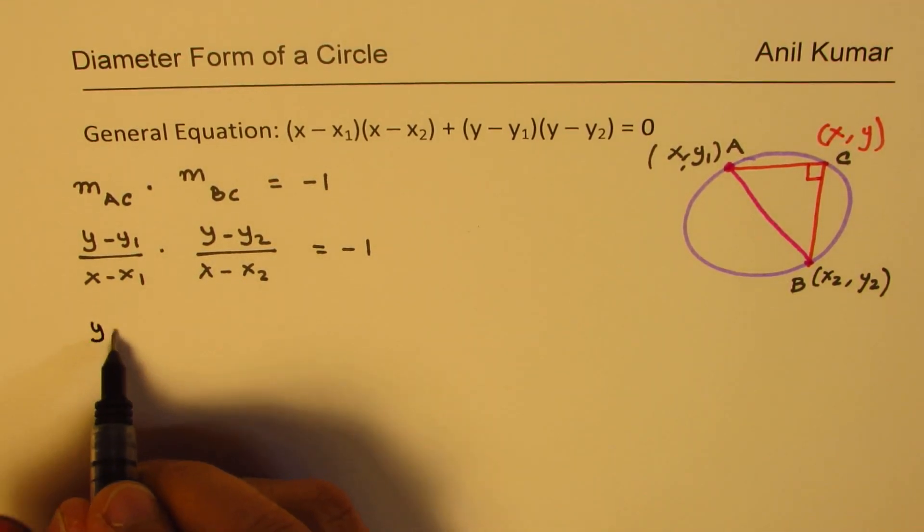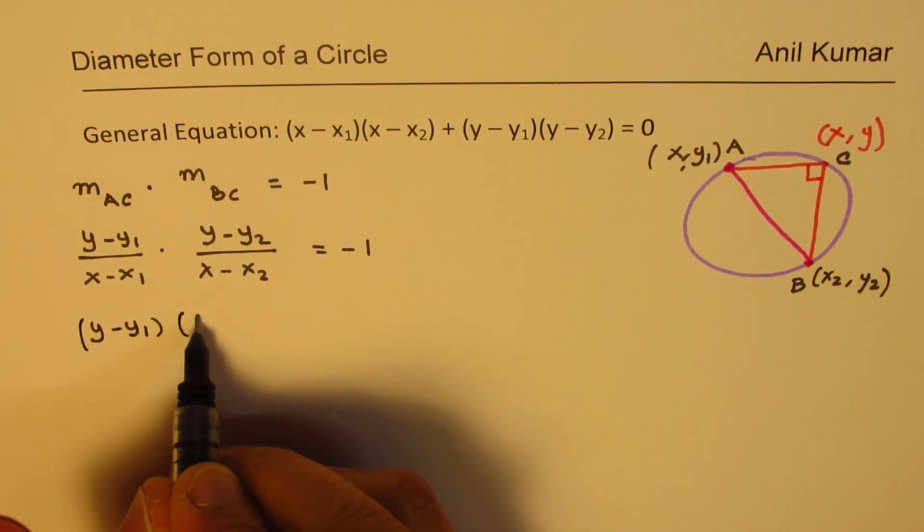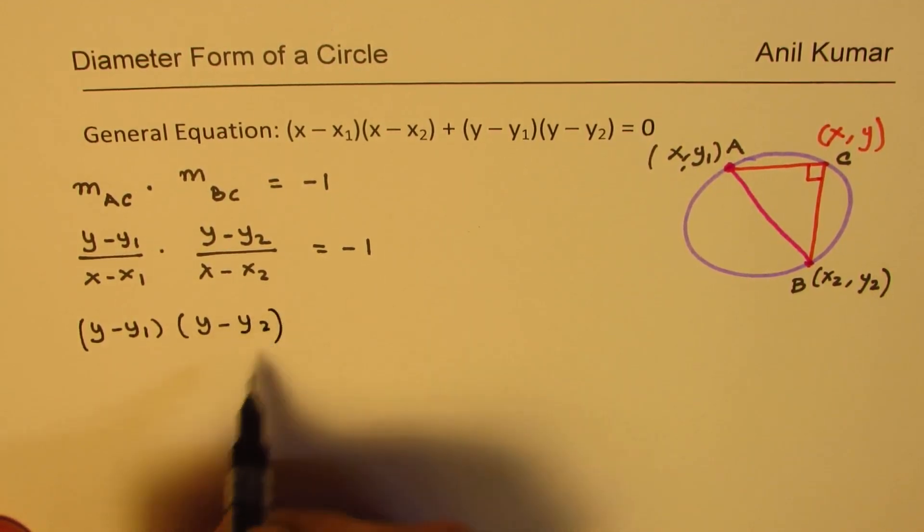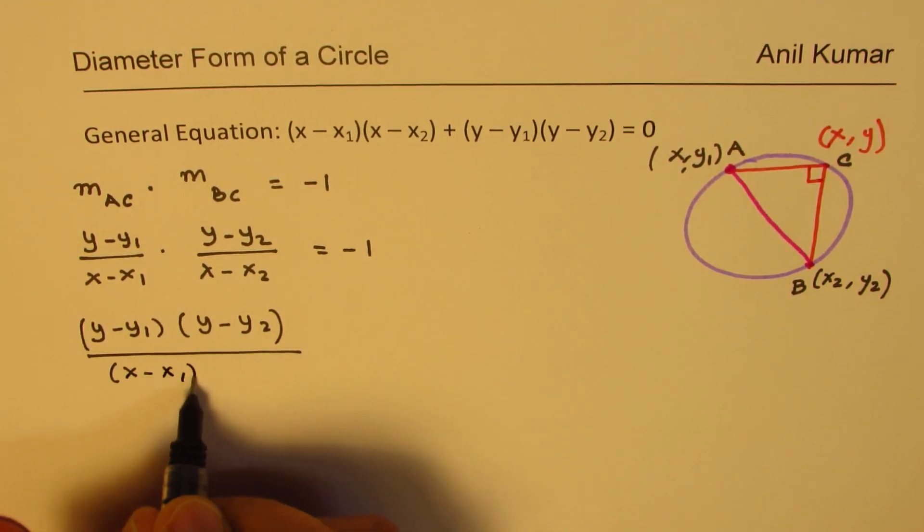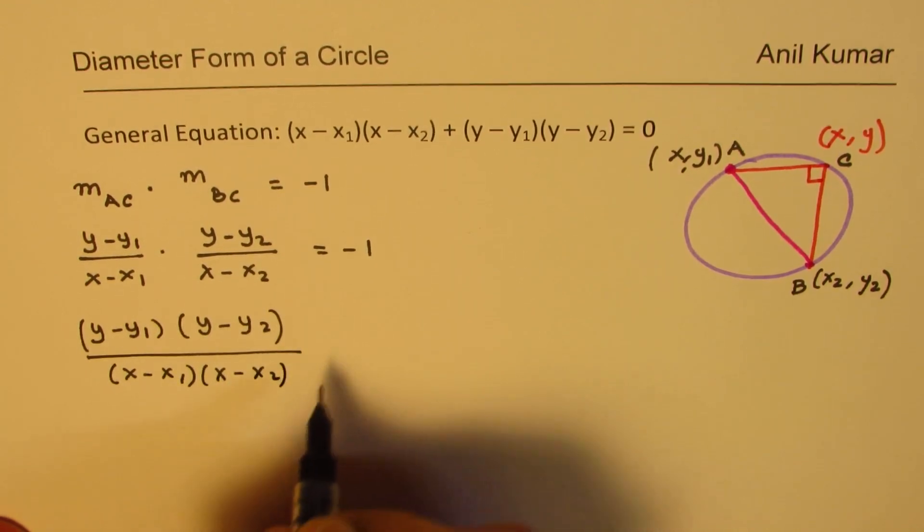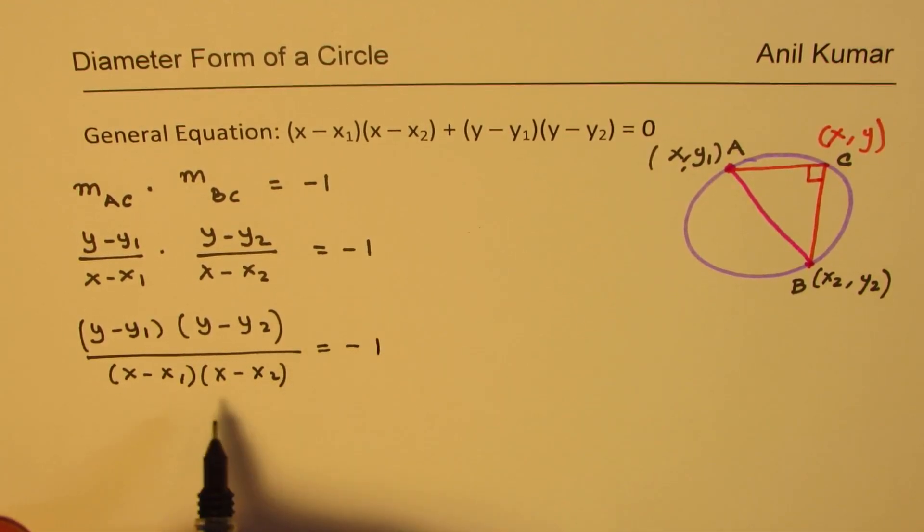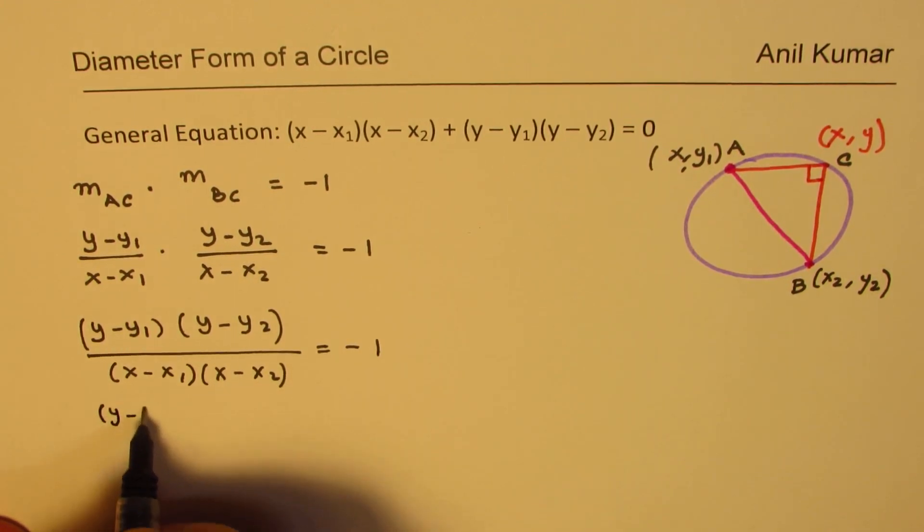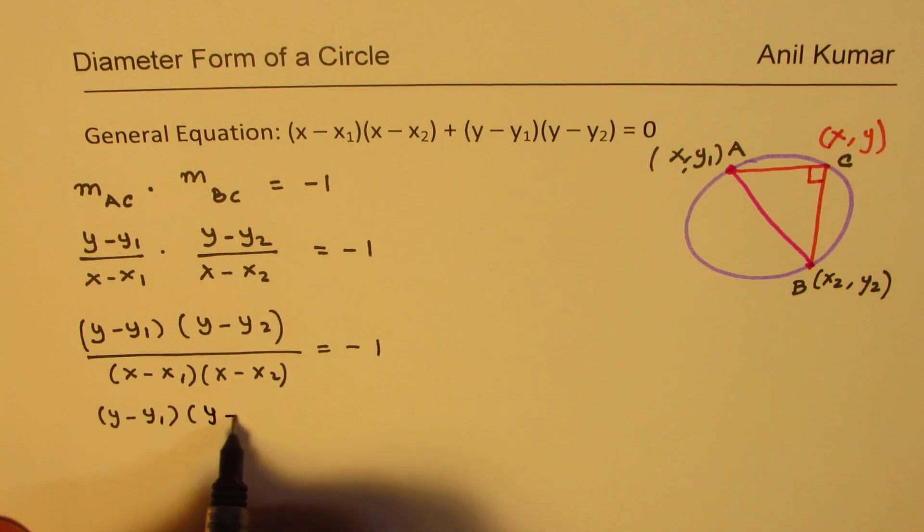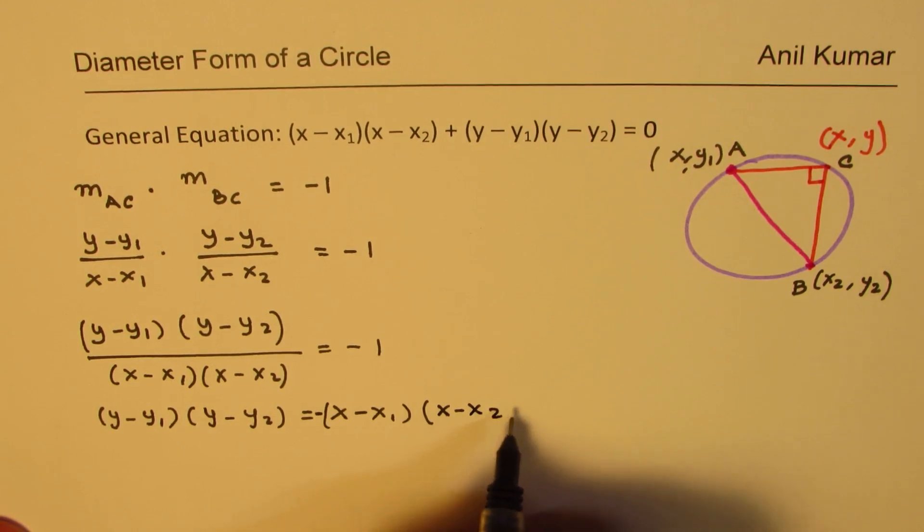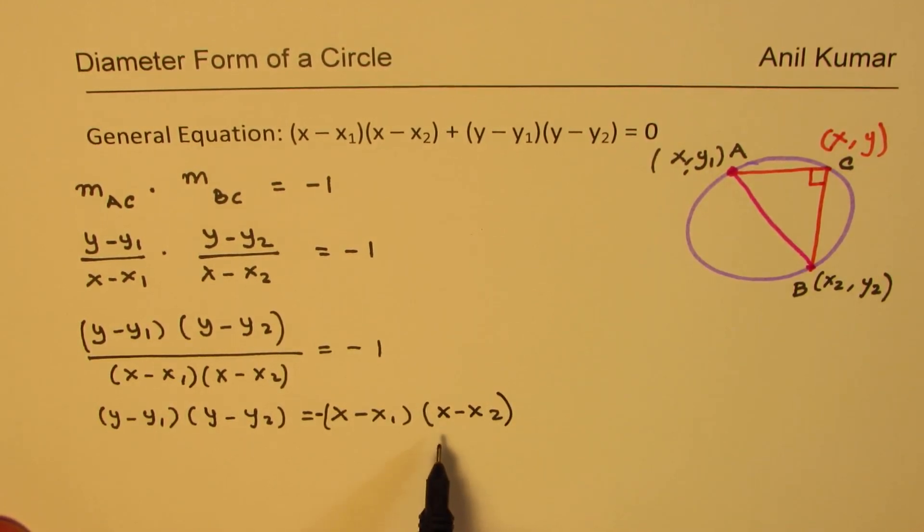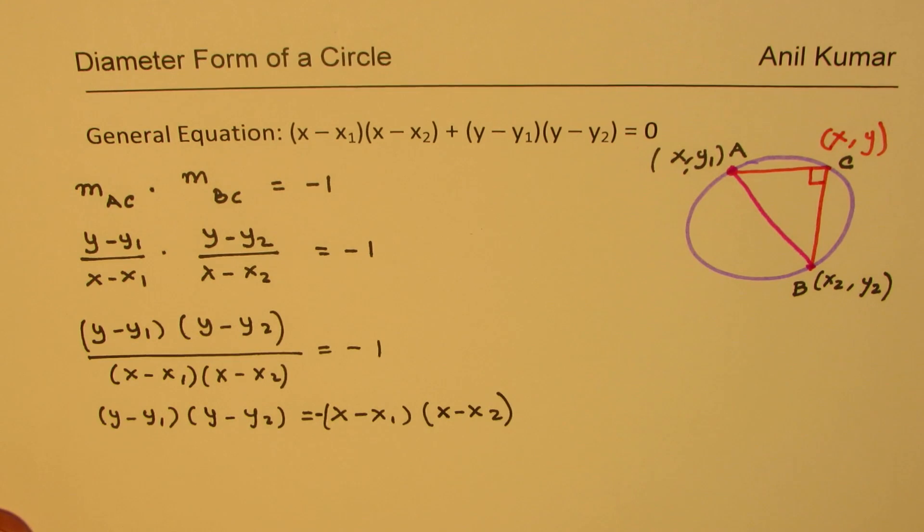Now clearly from here what do we get? We get (y minus y1) times (y minus y2). Now we could cross multiply but let me write down common denominator here as (x minus x1) times (x minus x2) equals to negative 1. Then if we cross multiply we get (y minus y1) times (y minus y2) equals to (x minus x1) with a negative sign. This is negative times (x minus x2).